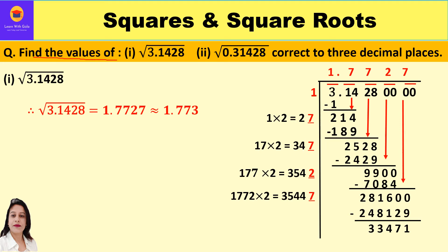The question is: find the values of square root of 3.1428 and square root of 0.31428, correct to three decimal places. If you observe these numbers, both are in decimal form and their digits are the same — 3.1428 and 0.31428 — only the place of the decimal point is different. When the decimal point is at a different place, even though the digits are same, we will get a different value of the square root.